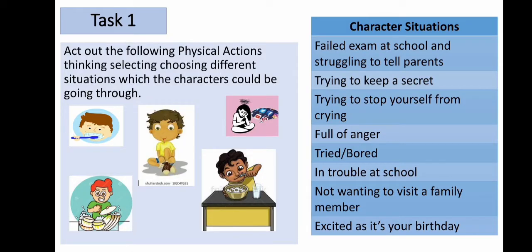Task one. Act out the following physical actions, thinking about different situations which the characters could be going through. Character situations: failed exam at school and struggling to tell parents; trying to keep a secret; trying to stop yourself from crying; full of anger; tired or bored; in trouble at school; not wanting to visit a family member; and excited as it's your birthday. Remember to think about the emotions and think about the actions physically and vocally whilst performing. Your teacher will call out each scenario and you will have a few seconds to start rehearsing. Please pause the video here.